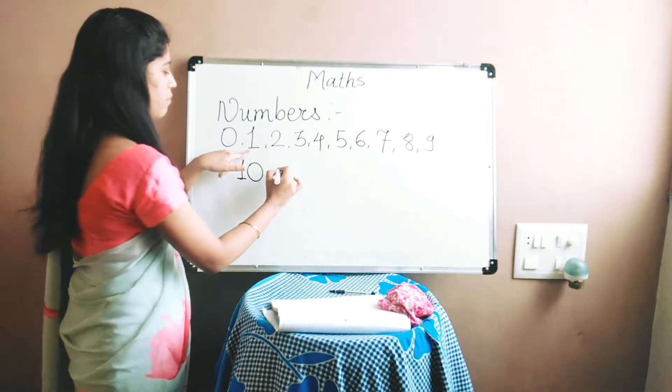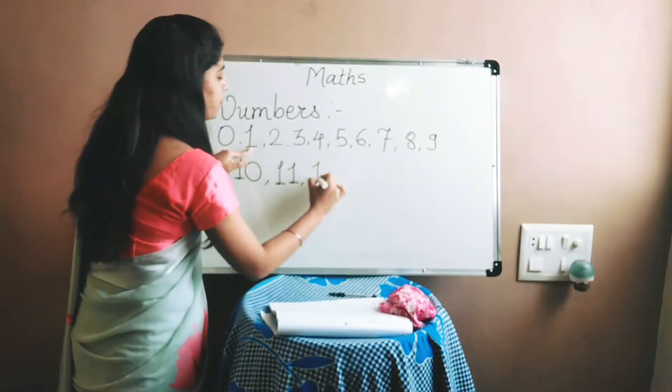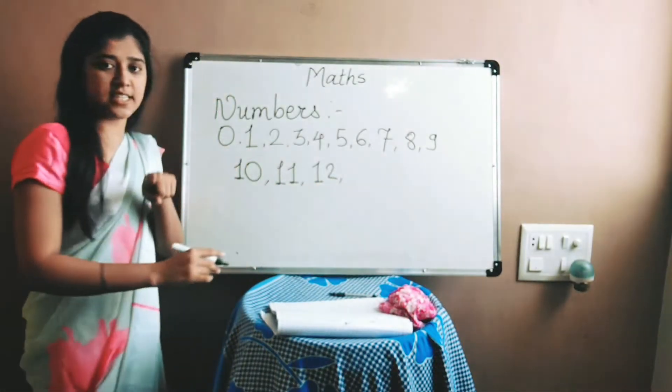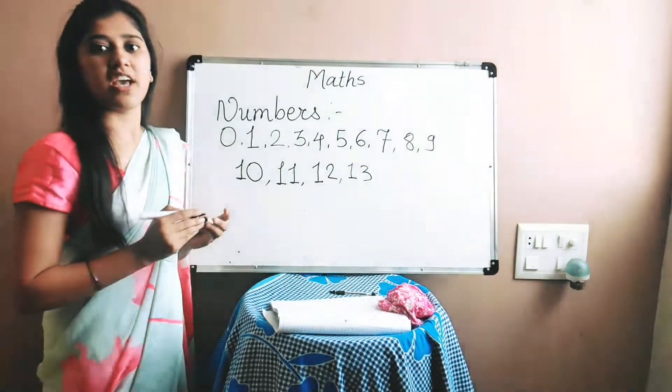11 is the combination of 1, 1. 12 is the combination of 1, 2. 13 is the combination of 1, 3. Right? In this way you can write the numbers. Okay?